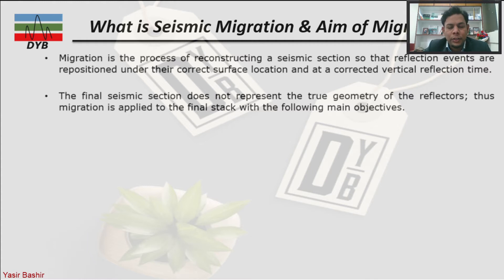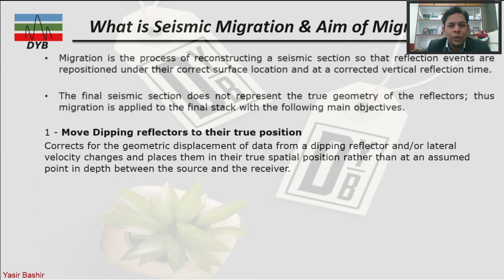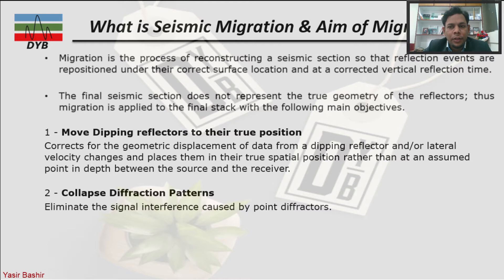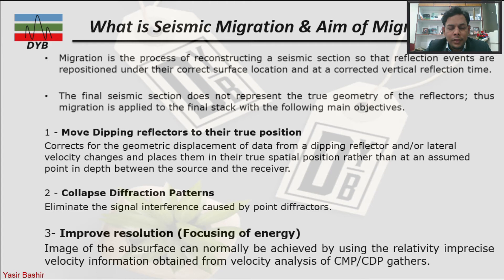Migration is applied to the final stack or pre-stack data to achieve three main objectives. The first objective is to move dipping reflectors to their correct or true position. When we have complex subsurface geometry with many dipping reflectors, we do not get their true position in time data, which is why we apply time migration or depth migration. The second objective is to collapse the diffraction pattern by eliminating signal interference caused by point diffractors.